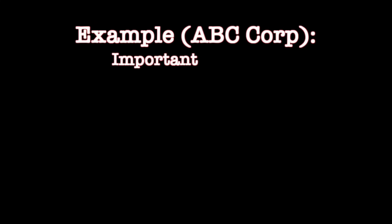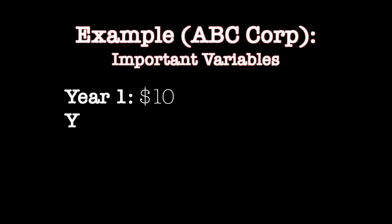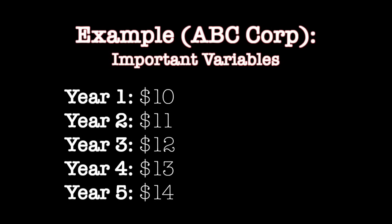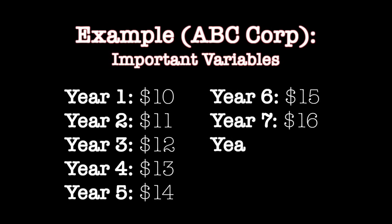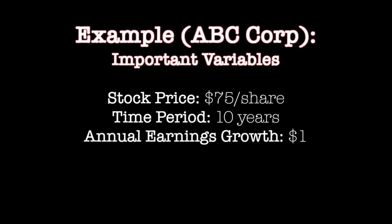Let's take a hypothetical company called ABC Corp. ABC Corp stock is selling at $75 per share, and we want to know if the stock is undervalued compared to its intrinsic value. Let's say ABC Corp will operate over a 10-year period and make $10 per share in the first year, growing its annual earnings by $1 every year, all the way to $19 per share at the end of year 10, in which it will stop operating. The next important variable is the interest rate at which you discount the cash flows back — let's use 5% in this example.